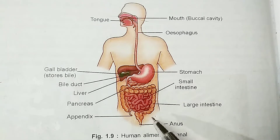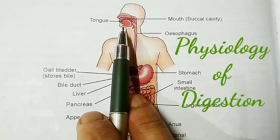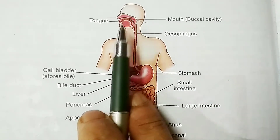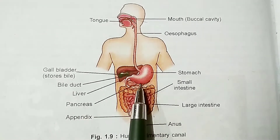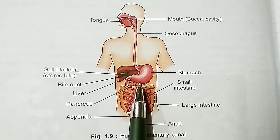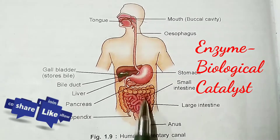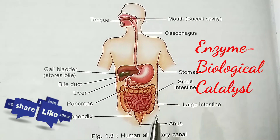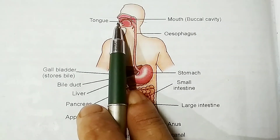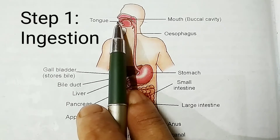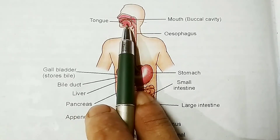Now I am going to discuss the physiology of digestion — that means the steps required for the digestion of food. Digestion is a series of changes by which complex food is converted into simple and absorbable forms by the action of enzymes. Digestion mainly takes place in the buccal cavity, the stomach, and the small intestine. The first step in holozoic nutrition is called ingestion, which simply means the intake of food. Digestion begins in the mouth.